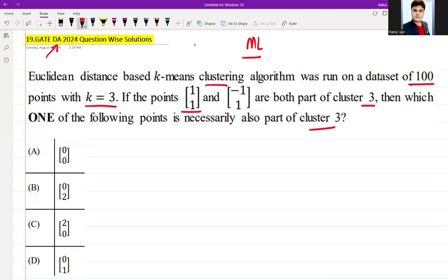If you can see here, we have two points, (1,1) and (-1,1), and they belong to cluster 3. If they belong to cluster 3, then which one out of A, B, C, D also necessarily belongs to cluster 3?